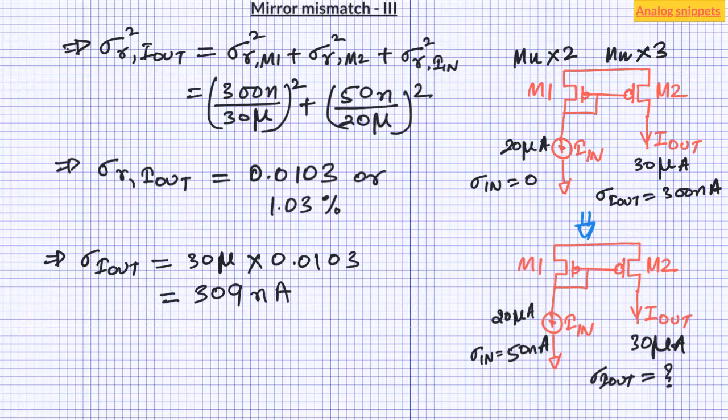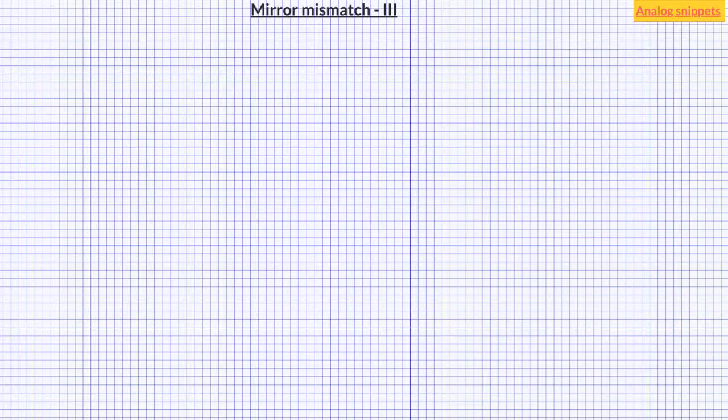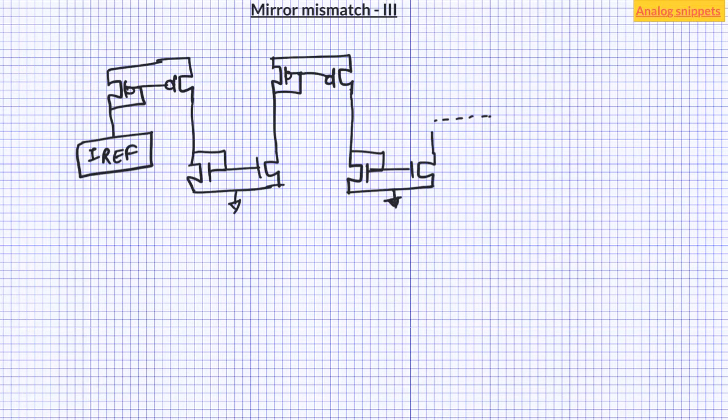Now the fact that all the components contribute to the error has a very important implication. Imagine that we have a cascade of current mirrors. So the first mirror is biased by perhaps a very low variation current reference generator. And then that current is mirrored several times to reach the final destination. This kind of configuration can be found rather commonly in a big chip.